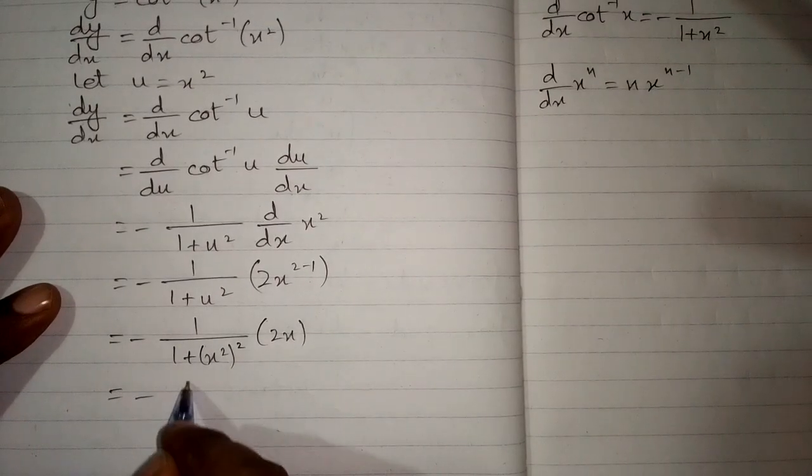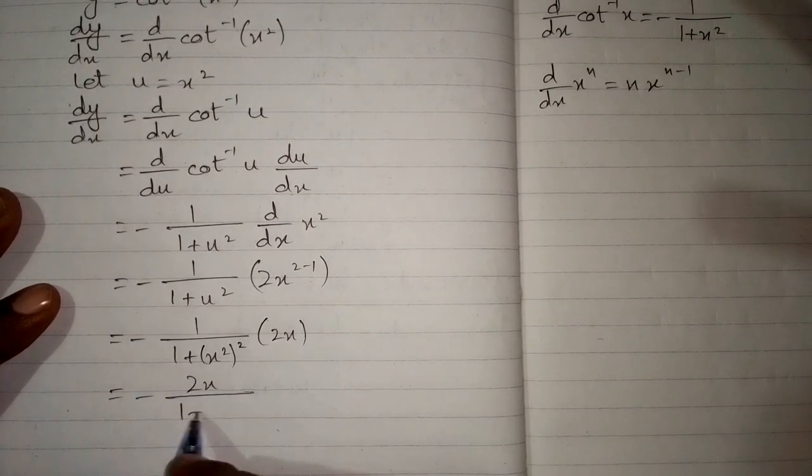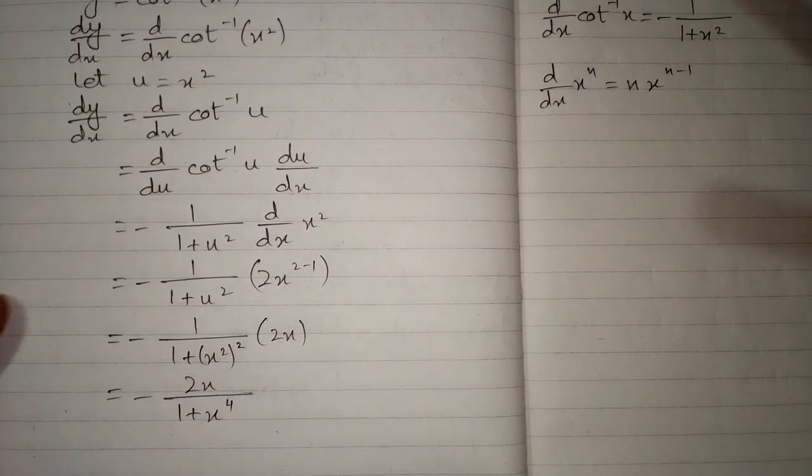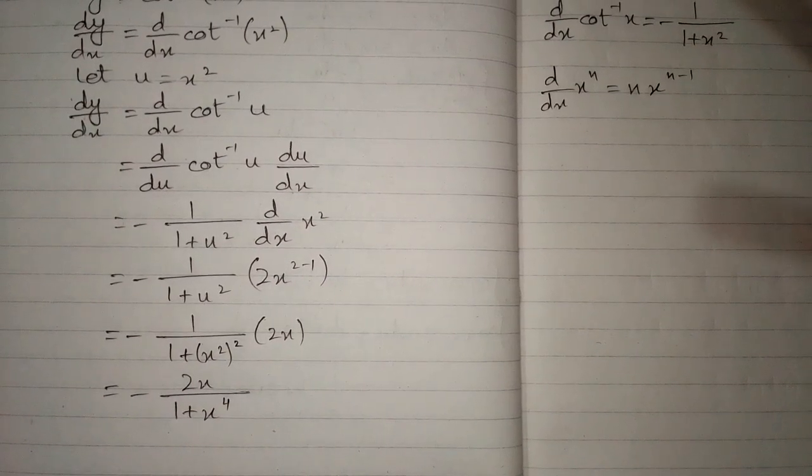This can be written as minus 2x upon 1 plus x to the power 4. And this is the answer.